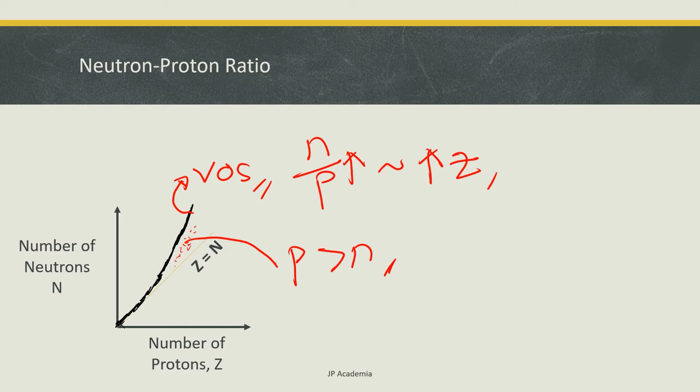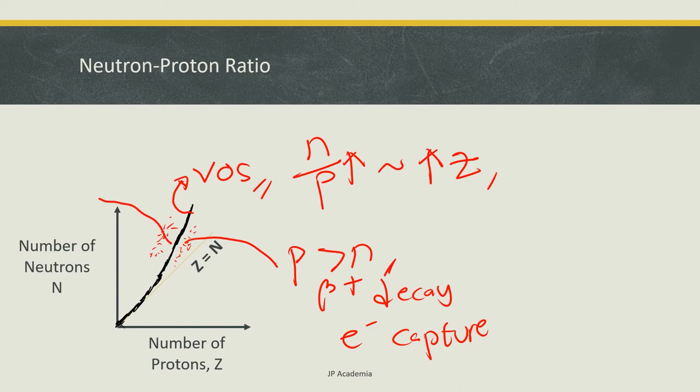These nuclides tend to be unstable to beta plus decay or electron capture since such decay converts protons to a neutron. On the other side of the valley of stability, at the left side, the ratio is large that corresponds to an excess of neutrons over protons, and these nuclides tend to be unstable to beta minus decay, since such decay converts neutrons to protons.